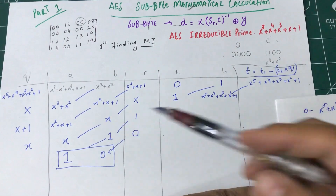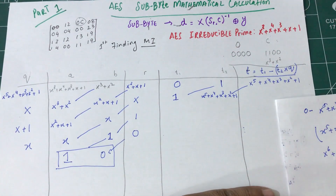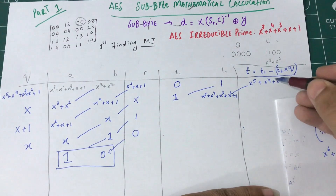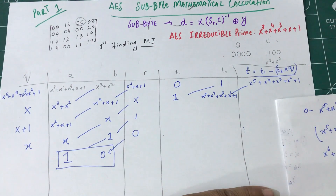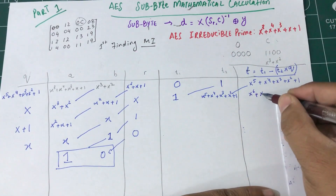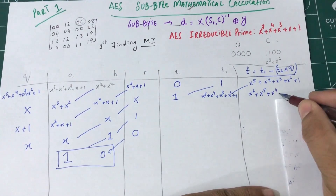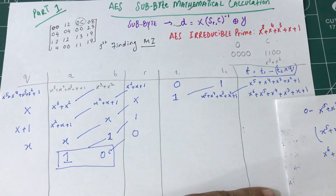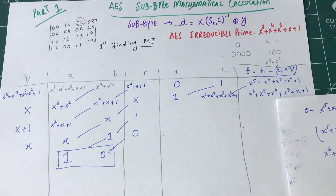Then I subtract 1 — but in modular 2 arithmetic, addition and subtraction are the same. So when I look for similar terms, if there are no matching terms, I just keep them. The result is x^6 plus x^5 plus x^4 plus x^3 plus x plus 1, because that term was not there to cancel.